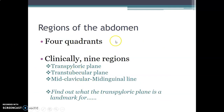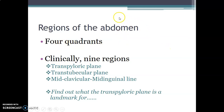The abdomen is divided into four equal quadrants clinically, and also into nine regions. The four quadrants are created by a vertical midline and a transverse line through the umbilicus. The nine regions are defined by two transverse planes — the transpyloric and transtubercular planes — and two vertical lines running from mid-clavicular to mid-inguinal points.